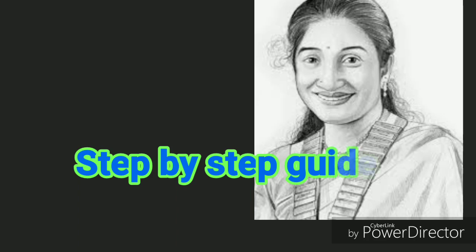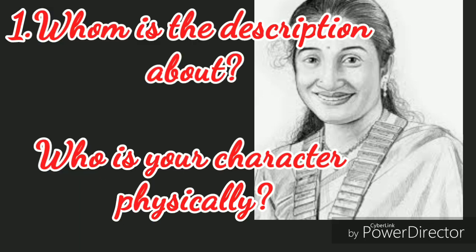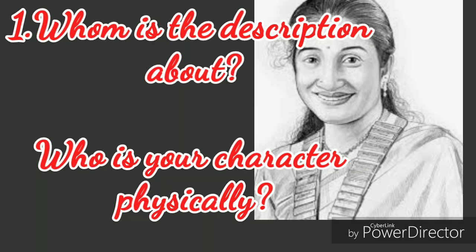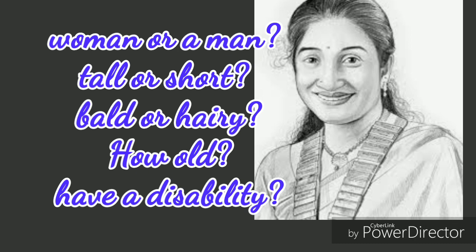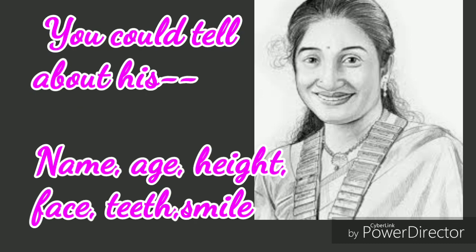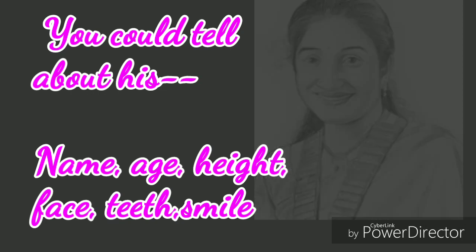Now I'm going to give you a step-by-step guideline. The first thing is: whom is the description about? Physical characteristics are the first things we notice when we meet someone, so this is a good starting point. Is your character a woman or a man? Is he or she tall or short? Is your character bald or hairy? How old is your character? Does he or she have a disability? You could tell about name, age, height, face, teeth, and smile.